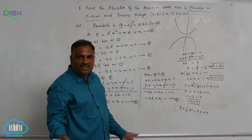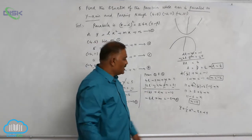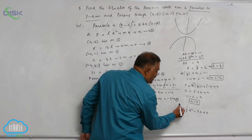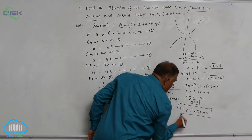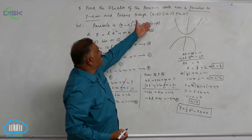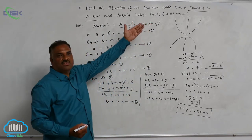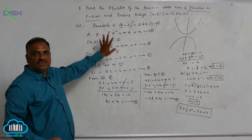If you want you can take LCM, otherwise leave it as it is. So this is the required parabola passing through the three given points whose axis is parallel to the Y axis.